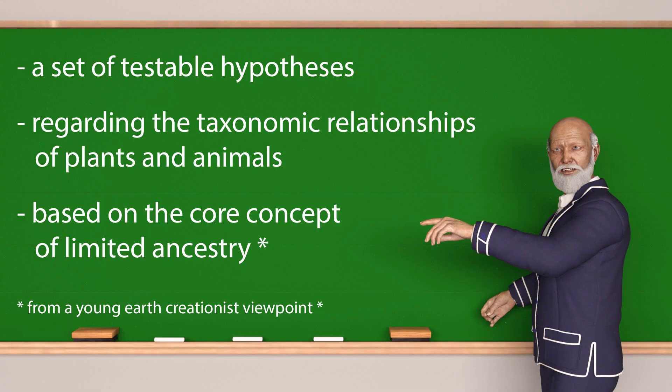The short answer is a set of testable hypotheses regarding the taxonomic relationships of plants and animals based on the core concept of limited ancestry. The long answer is somewhat more complicated. There are actually multiple models of created kinds, and they can differ a little or a lot from one another.